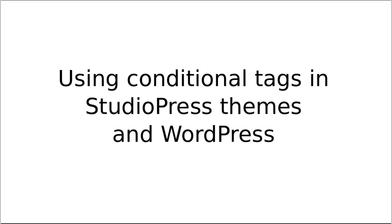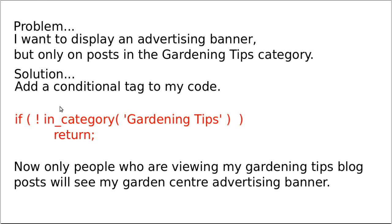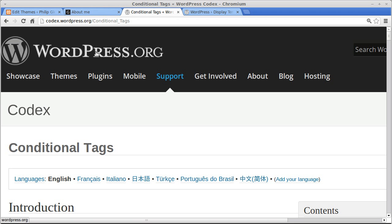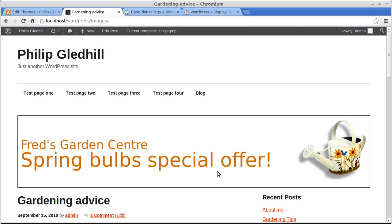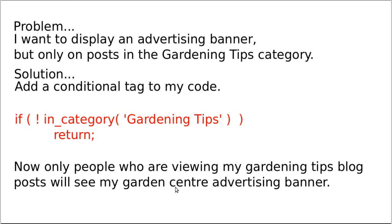Let's go back to the slides. What we're doing is using conditional tags in StudioPress themes and WordPress. The problem: I wanted to display an advertising banner but only on posts in the gardening tips category. The solution was a conditional tag in my code. It says: if not in_category('gardening-tips') return. In plain English: if it's not in the category of gardening tips, don't run the code that makes the widget area appear.